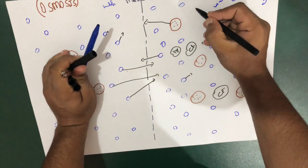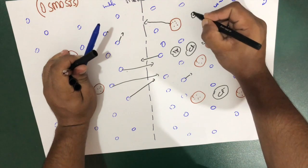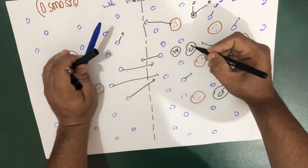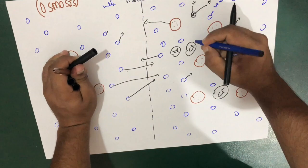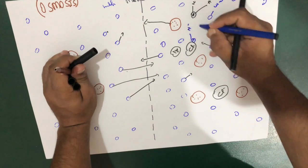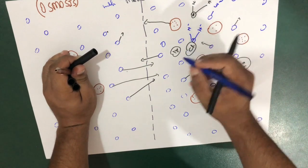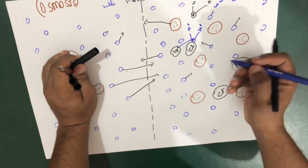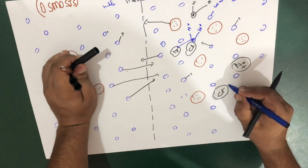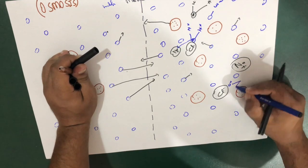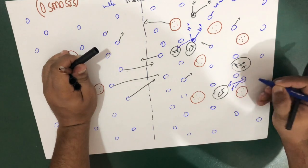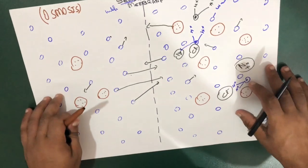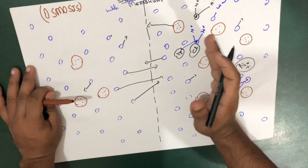Water molecules have two sides — a negative oxygen side and a positive hydrogen side, making water a polar molecule. So the positive hydrogen side is attracted toward the negative chloride ion, and the negative oxygen side is attracted toward the positive sodium ion. This is how water molecules are attracted to dissolved solutes across the semi-permeable membrane.